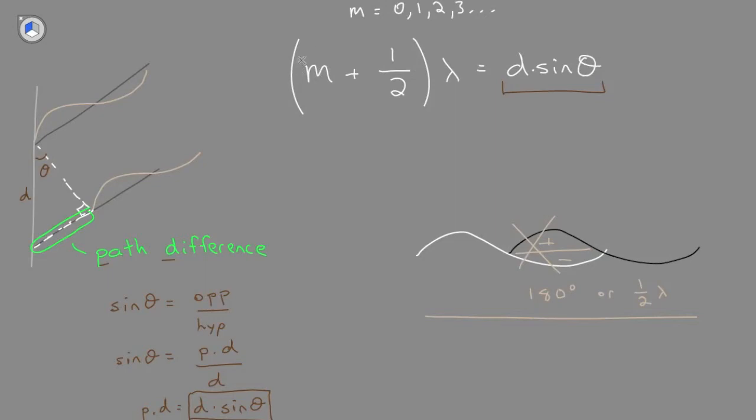And when we sub in these integers for m, 0, 1, 2, 3, you should see that we will get either half wavelengths, or one and a half wavelengths, etc. Some multiples of a half wavelengths, and these will destructively interfere. This is why the equation uses half.